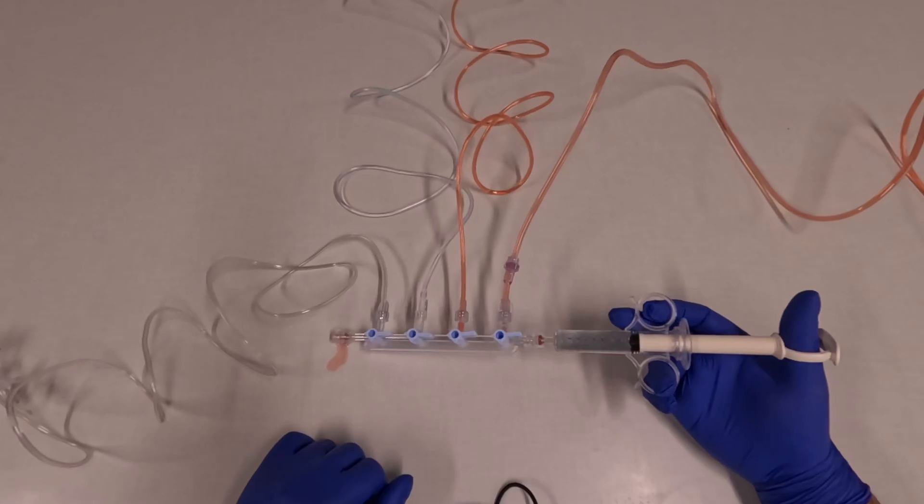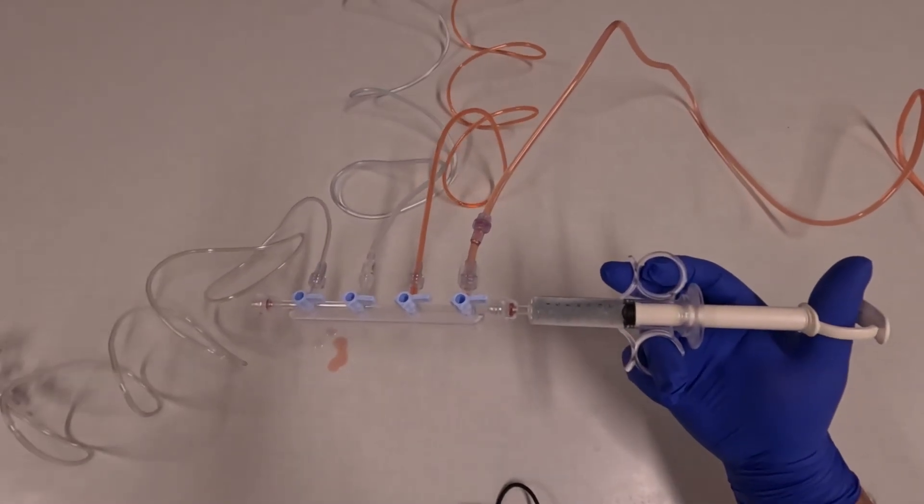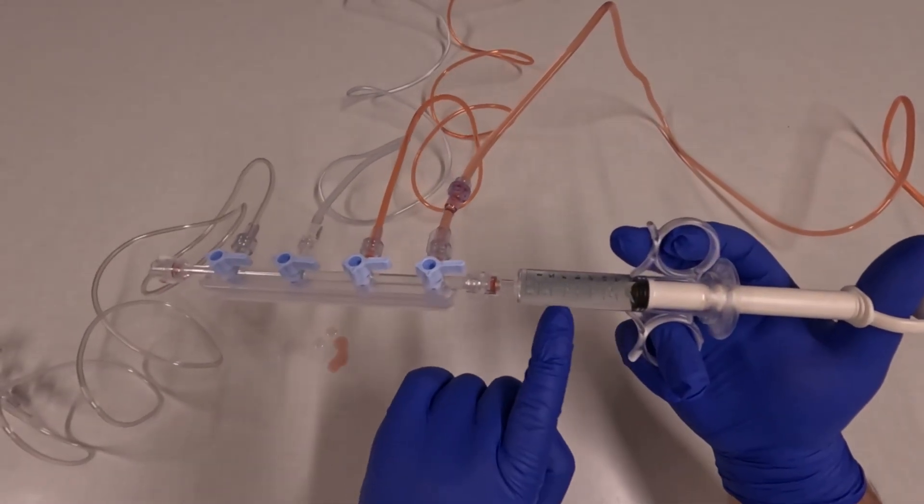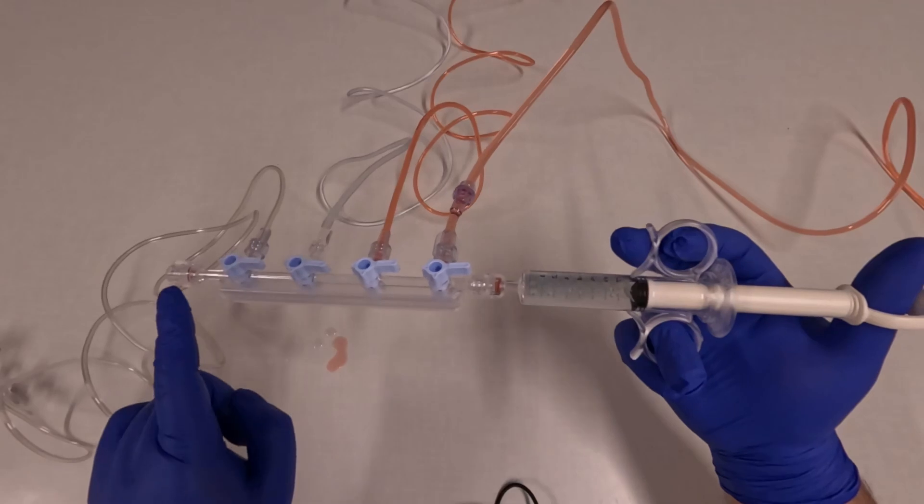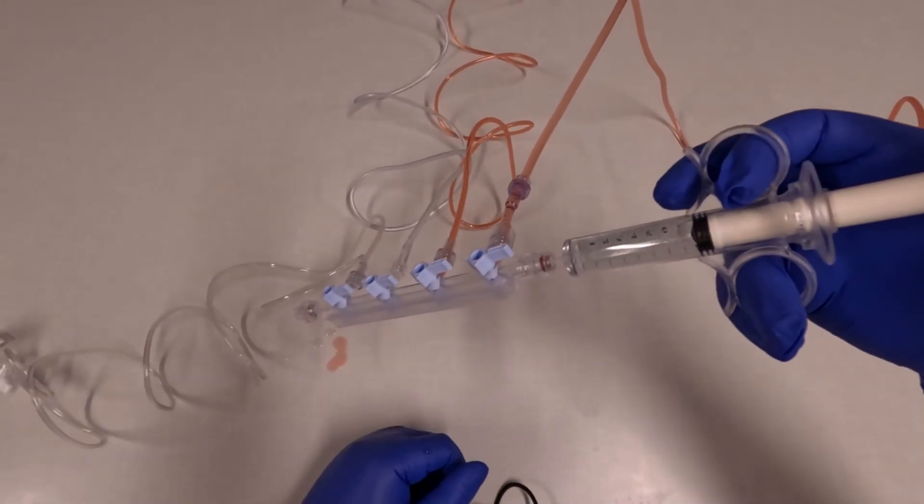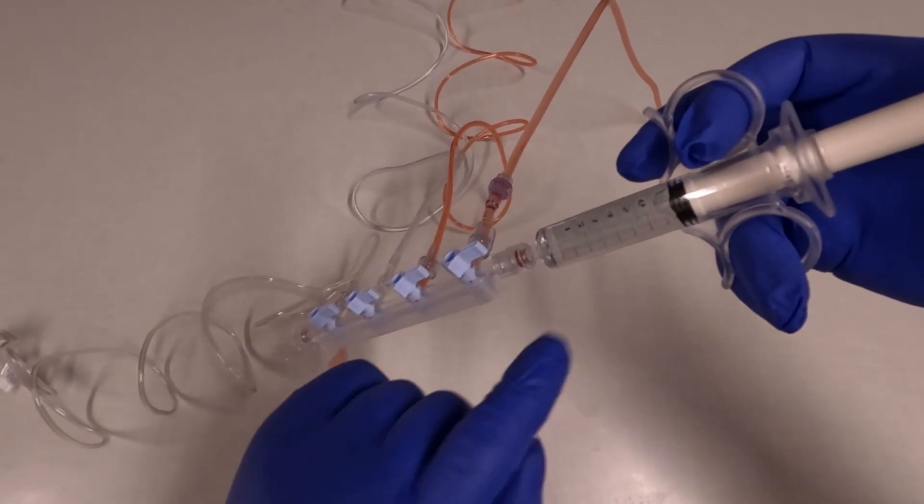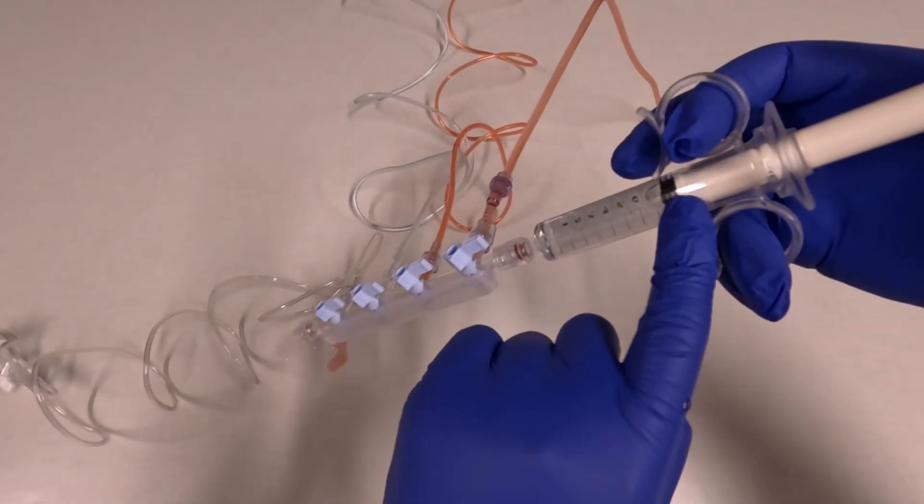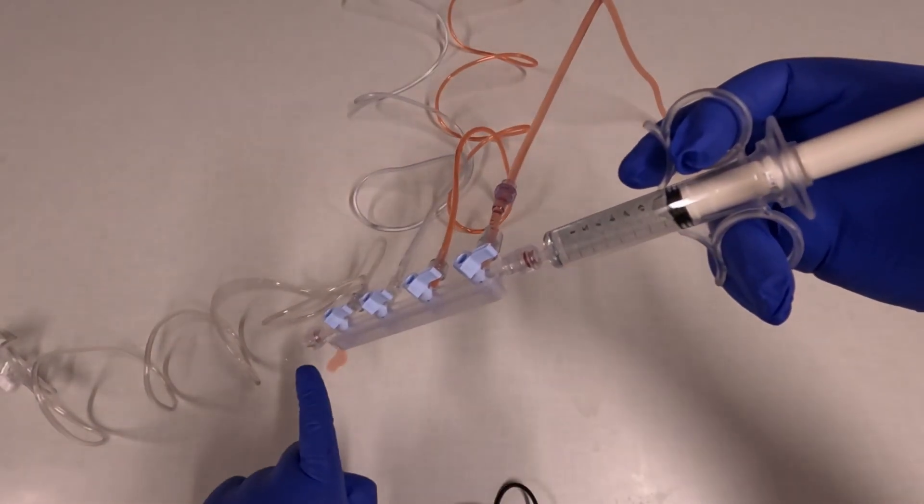Another critical aspect of using a manifold is making sure that you never inject air into the patient. You can see here that I have fluid in my syringe. If I want to inject this into the patient, I would always hold the manifold in a downward trajectory like this so that any air in the syringe rises